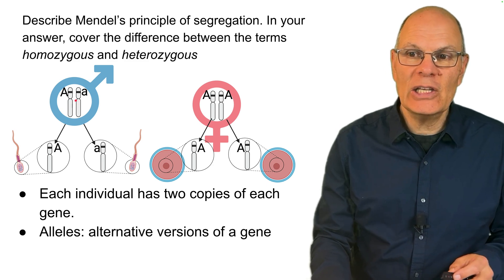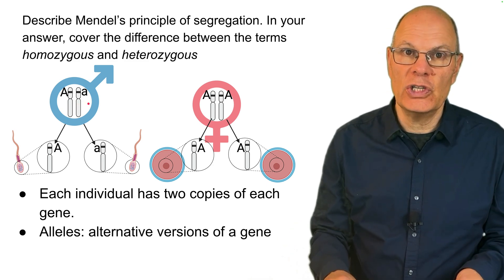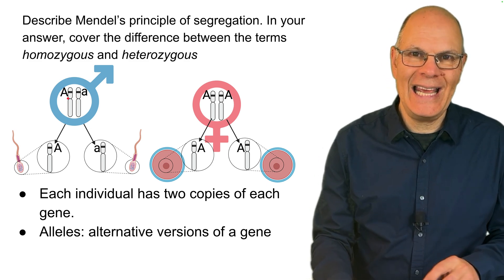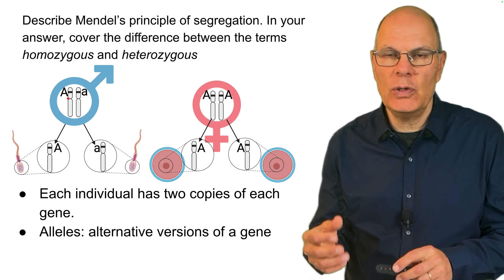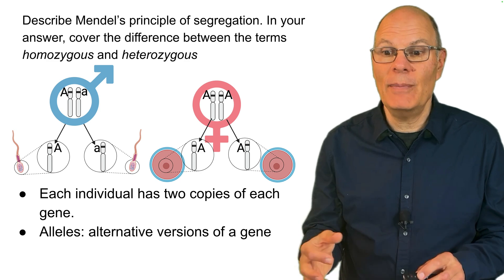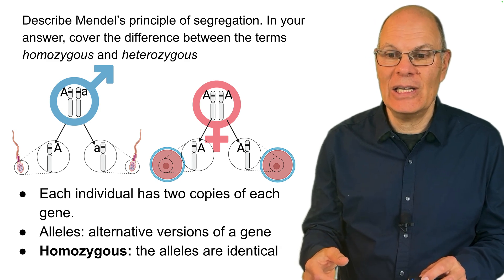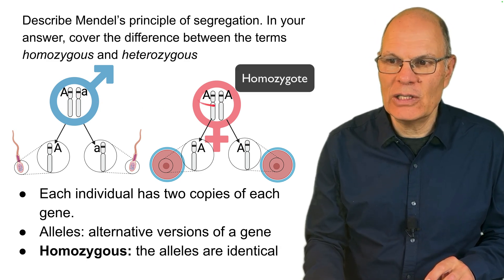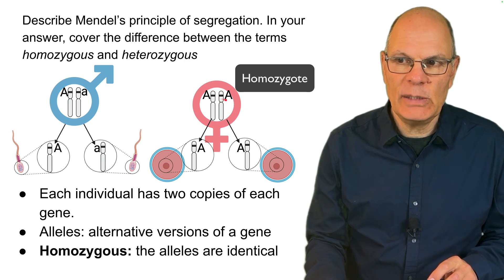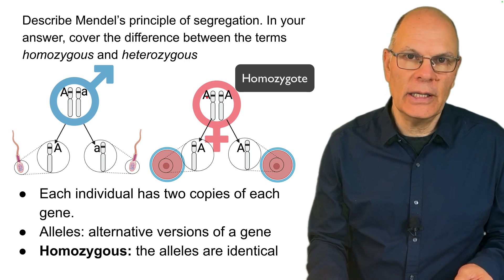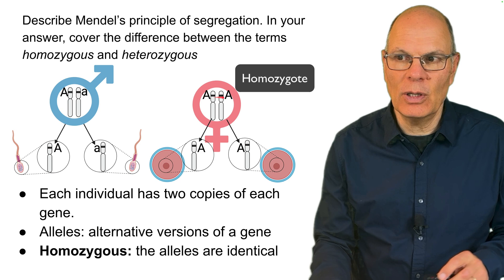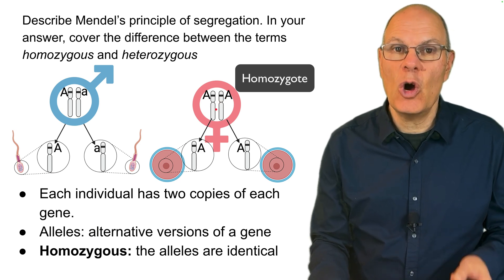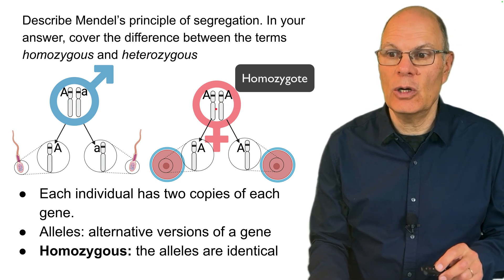Alleles are alternative versions of genes that may have different DNA sequences, producing proteins with different amino acid sequences. Homozygous means that the two alleles are identical. For example, in this parent both alleles are designated with a capital letter A — they are the same, so this person is a homozygote for this particular gene.